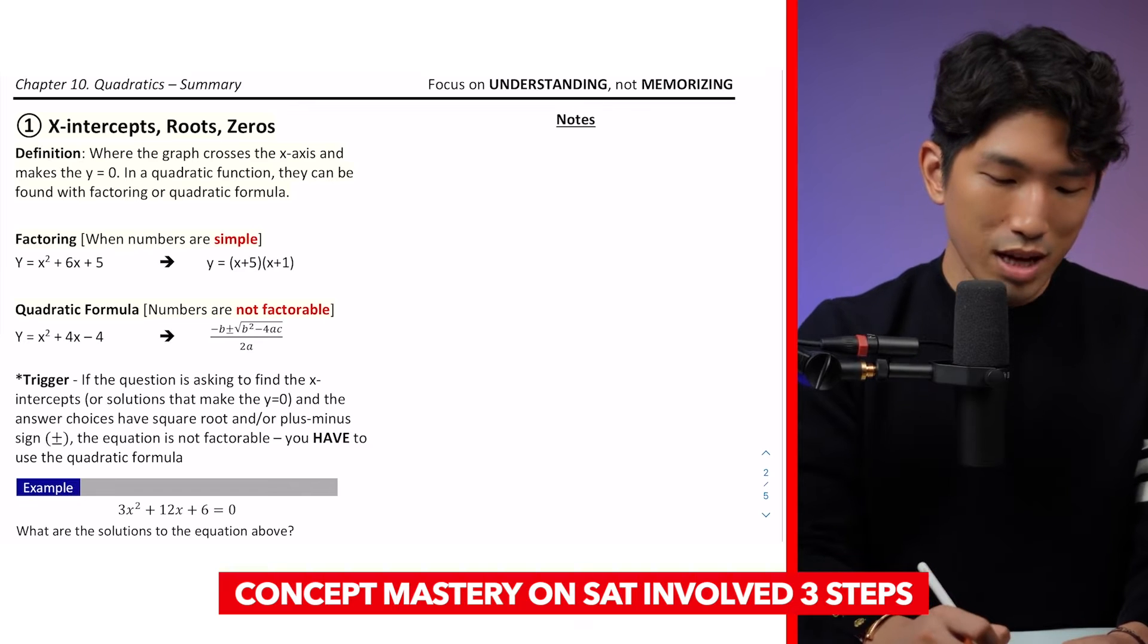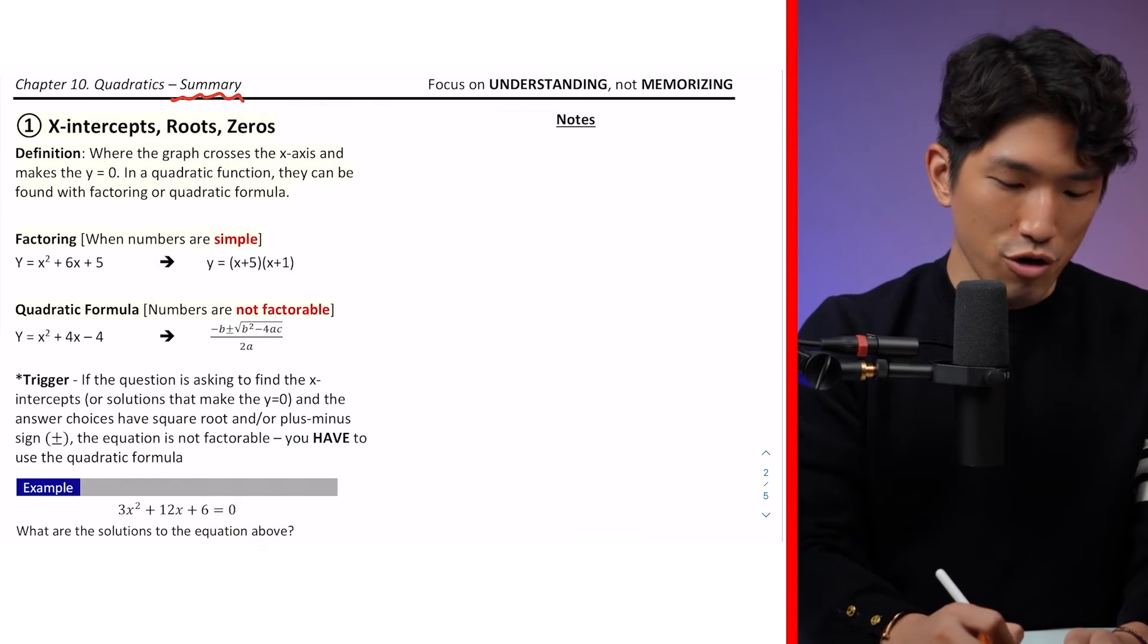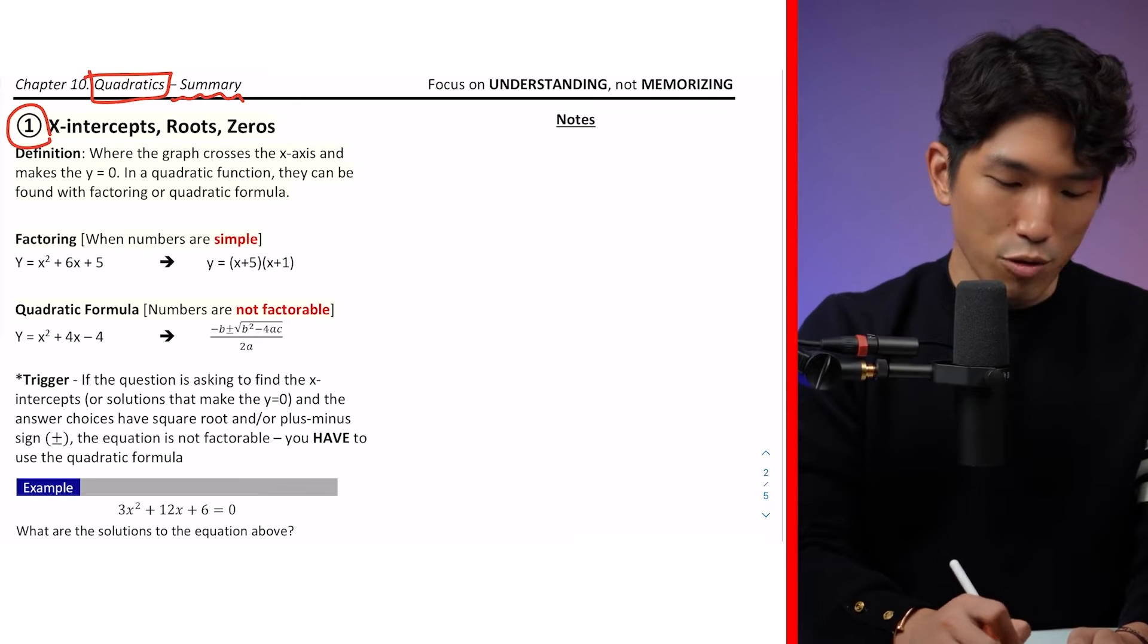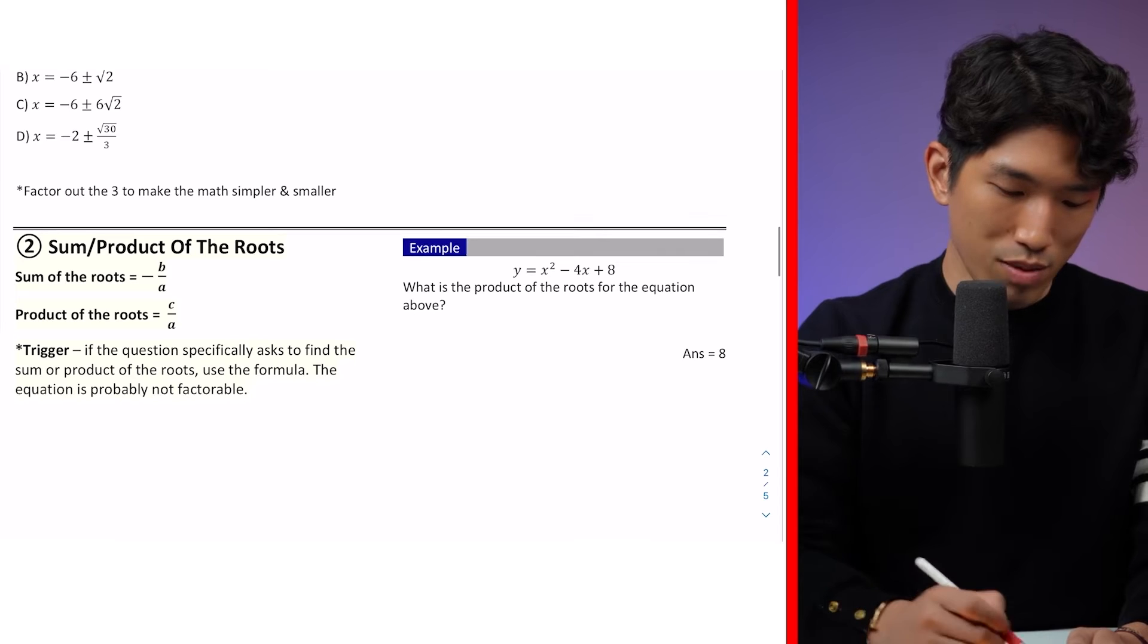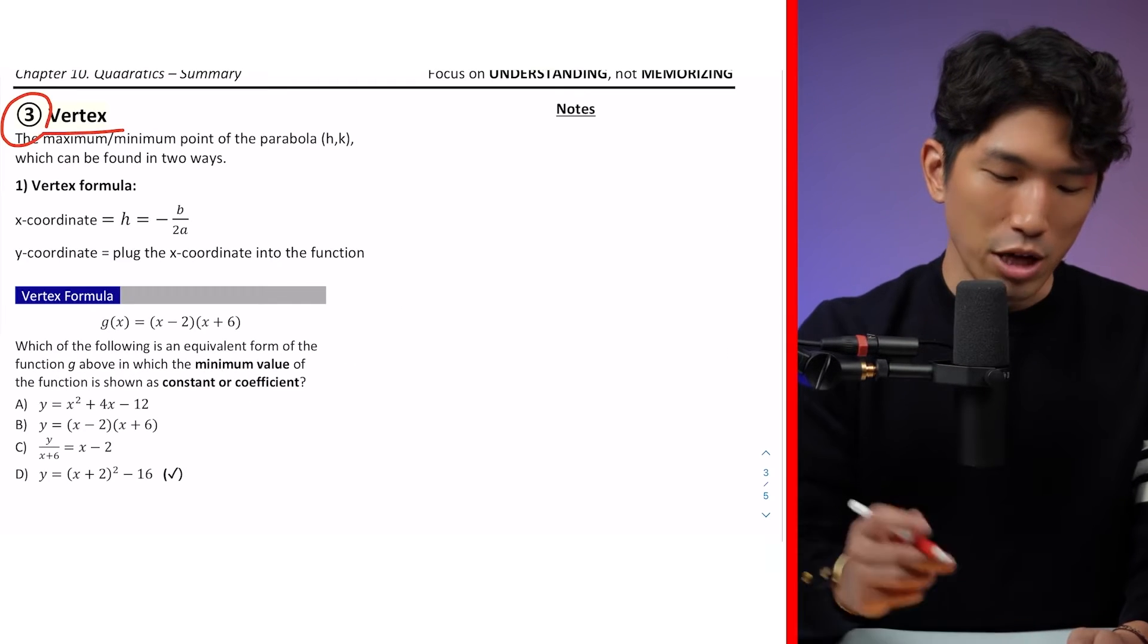Well, here's the thing. This is going to be the concept summary that my students use inside the accelerator program. But here's everything you need to know about quadratics. There are going to be five different things. So, for example, first is going to be x-intercept. Second is going to be finding the sum and product of the roots. Third is going to be based on finding the location of the vertex.